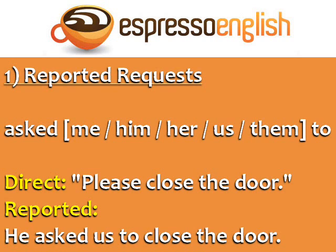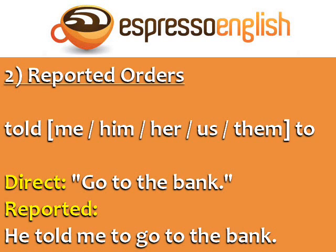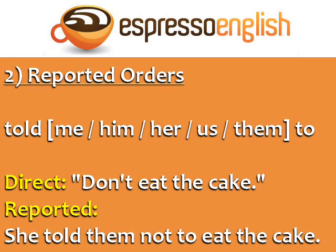It is 'close' in the direct statement and 'close' in the reported statement. For reported orders or commands, use the structure: told me, him, her, us, or them to. For example — Direct: 'Go to the bank.' Reported: 'He told me to go to the bank.' Direct: 'Don't eat the cake.' Reported: 'She told them not to eat the cake.' Again, in reported orders, the main verb does not change its form from the direct to the reported statement.